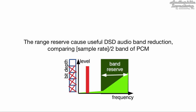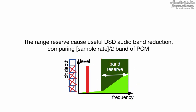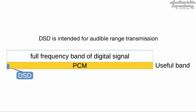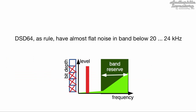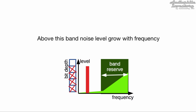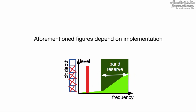This range reserve causes a useful DSD audio band reduction compared to the full audio band of PCM. DSD is intended for audible range transmission, not for ultrasound. DSD64 through DSD128 have almost flat noise in the band below 20–24 kHz. Above this band, noise level grows with frequency. These figures depend on implementation.